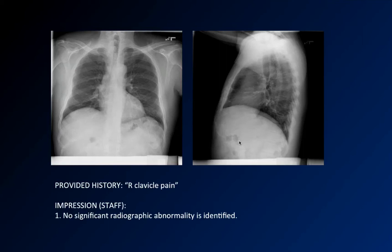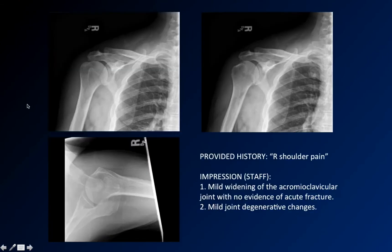Here's a chest x-ray. The history — this was read during the day, around 2 in the afternoon — was clavicle pain. It was read out as normal. The chest x-ray looks pretty normal, nothing bad in the lungs, clavicle looks pretty good. Then they got shoulder radiographs, which were also read out as normal by the staff with the resident, and they signed off.